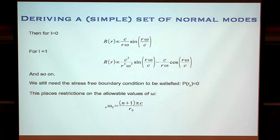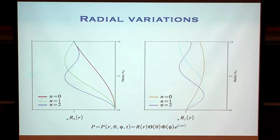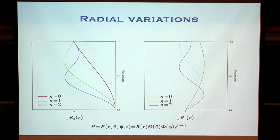This is what those radial dependencies look like — just plotting up the things from the previous slide. These radial dependencies are orthogonal to each other: you can't make up one from any number of the others. These are the eigenfunctions of the Earth.